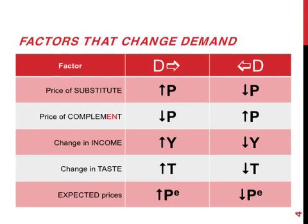Let's start with the price of substitutes, using the example of butter and margarine. If the price of butter increases, the quantity demanded of butter is going to decrease — you'll be eating less butter. But there will be an increase in the demand for margarine, and the whole demand curve for margarine will move towards the right.